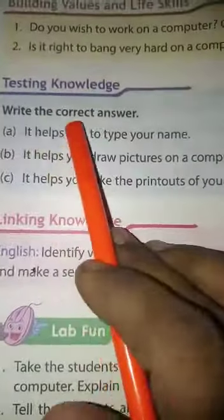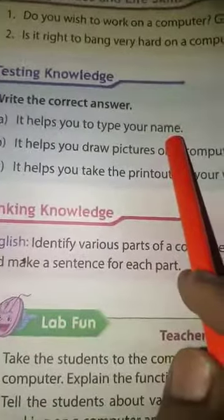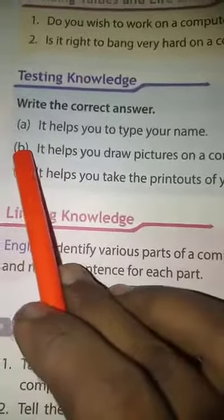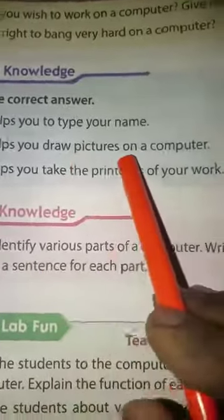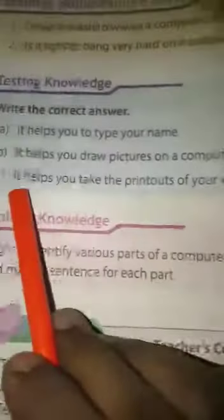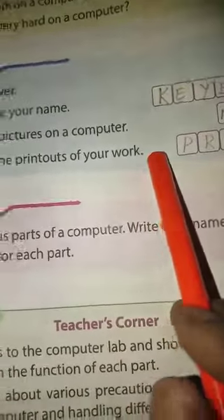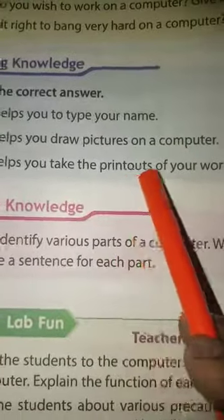Testing knowledge — write the correct answer. A: it helps you to type your name — keyboard. B: it helps you draw pictures on a computer — mouse. C: it helps you take the printouts of your work — printer.